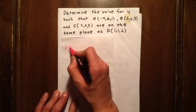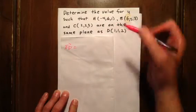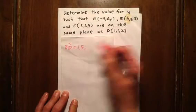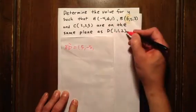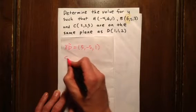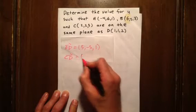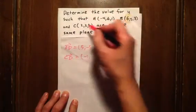The vector AD is 1 minus negative 4, 1 minus 6, 2 minus 1. The vector CD is 1 minus 2, 1 minus 2, 2 minus 5.